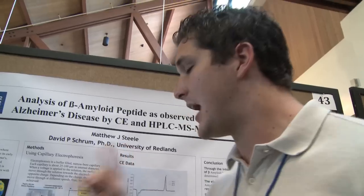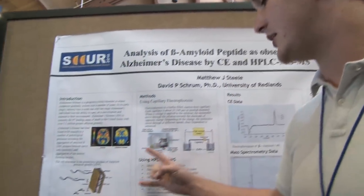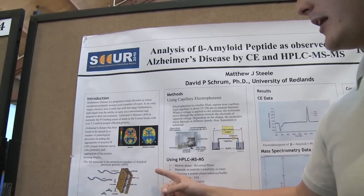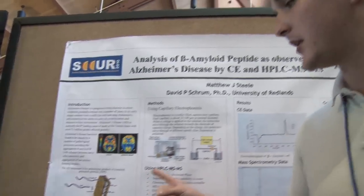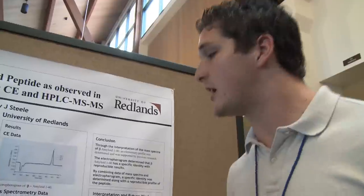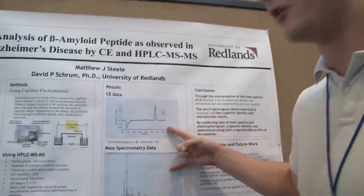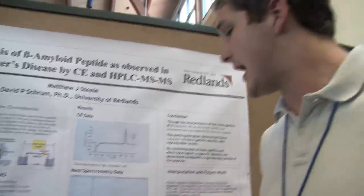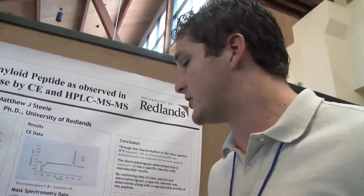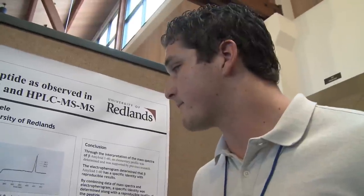The aim of my research was basically to make a profile of the beta amyloid that causes Alzheimer's disease. The results I found allowed me to set a baseline profile using CE and HPLC mass spec, and I was able to determine reproducible runs that identify this peptide within a specific solution.